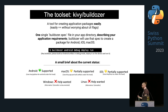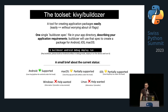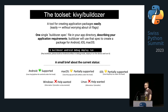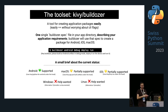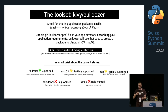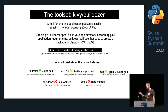Buildozer is a tool for creating application packages easily — meaning without worrying about CLI flags. You only need a single Buildozer spec file in your app directory describing application requirements. Buildozer will use the spec file to create a package for Android, iOS, and macOS. So when you run 'buildozer android debug deploy run', you're saying: build an Android artifact in debug mode, deploy it to the device, and run it. Super easy.